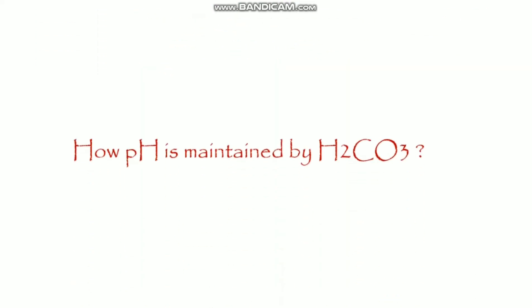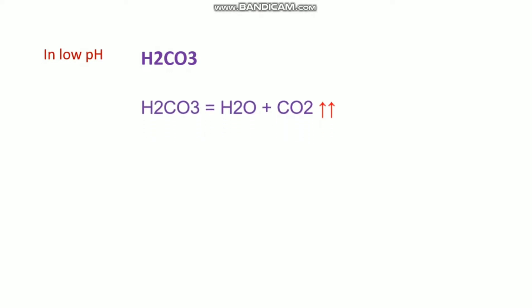How is pH maintained by carbonic acid? This is an important question. In case of low pH, there are a lot of H plus in the system. That H plus ion forms carbonic acid. That carbonic acid dissociates to water and carbon dioxide gas, and this carbon dioxide gas is exhaled through the lungs. This is why the acidic pH is maintained and neutralized by carbonic acid.